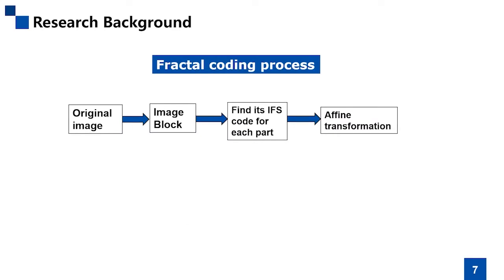The fractal encoding process is composed of four steps. The calculation of IFSCode for each image block is relatively large. Therefore, although the fractal encoding method achieves a higher compression rate, the time consumption is much longer, making it difficult to promote its application.